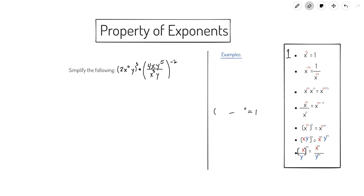So that's our first property of exponents: if I have a 0 power, it ultimately just drops out and cancels as the number 1. The second property of exponents deals with negative exponents. We don't like negative powers — we consider negative powers oftentimes not to be simplified, and so we need to know how to simplify an exponential expression dealing with negative powers.